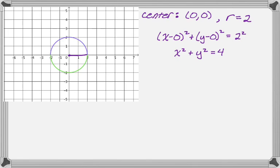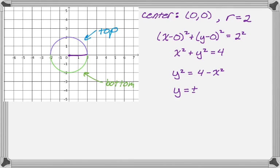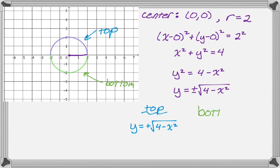We want to get the top half and the bottom half, so we solve our equation for y. Subtract x squared from both sides: y squared equals four minus x squared. Take the square root — remember, you get plus or minus, and that's the key to getting each of the two semicircles. The top half goes with the plus: y equals positive square root of four minus x squared. The bottom half goes with the minus: y equals negative square root of four minus x squared.